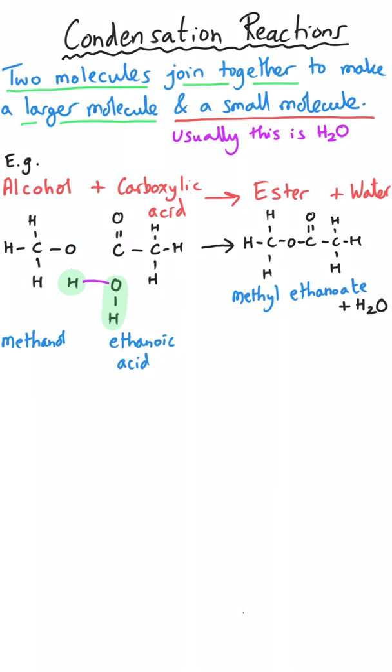So that gets removed from the structure, and that happens because these two covalent bonds are broken. And then what that does is that leaves this oxygen atom here with one bond and it needs two, and it leaves this carbon atom here with three bonds and it needs four. So a new bond forms between those two atoms as well. And this is our ester, and here is the water that has formed as a byproduct and gives the reaction its name.